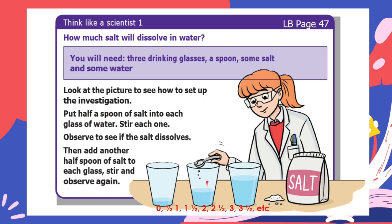Here it shows three cups of water — one with only a little water, one half full, and one full of water. Add half a teaspoon of salt to each cup, stir, then wait to see if it will all dissolve before adding another half teaspoon of salt. Stop adding salt to a cup when you can see salt that has not dissolved at the bottom.